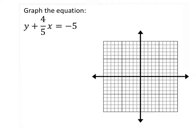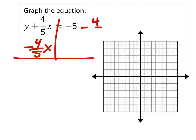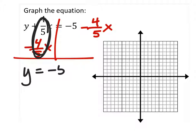Let's change this to slope-intercept form, so we're solving an equation on this one. I would subtract 4/5x from both sides, right? Once I do this, these two cancel out. So I have y equals negative 5 minus 4/5x.